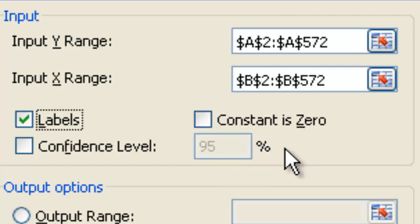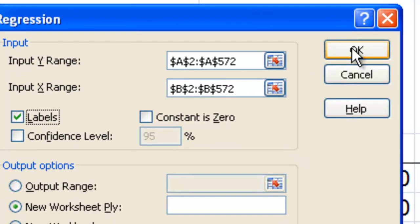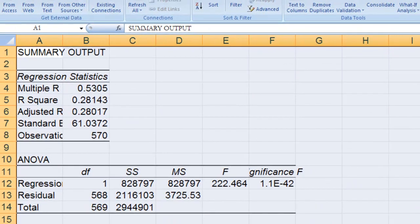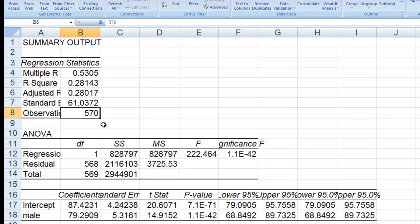It looks like everything is squared away, so I'm going to go ahead and click OK. Excel is going to think a little bit, then it's going to give you a new sheet like this.